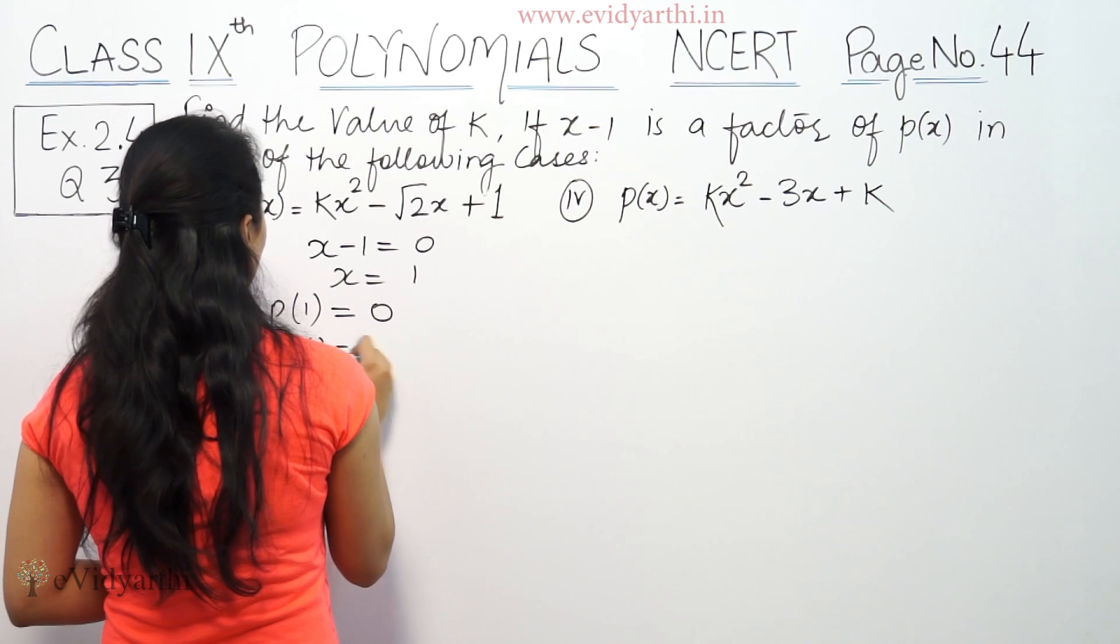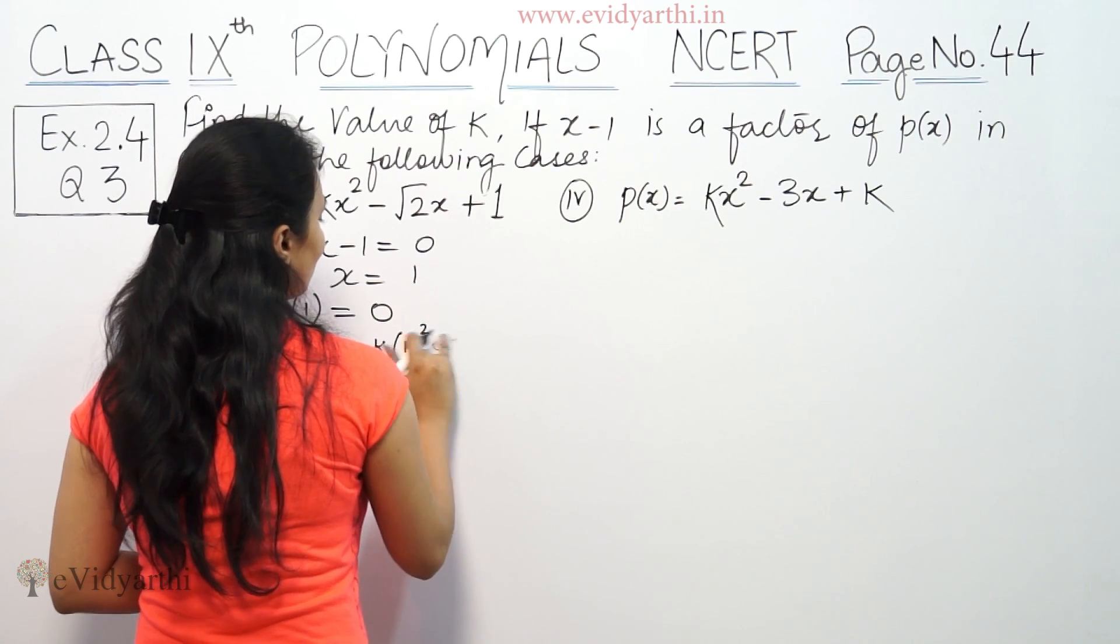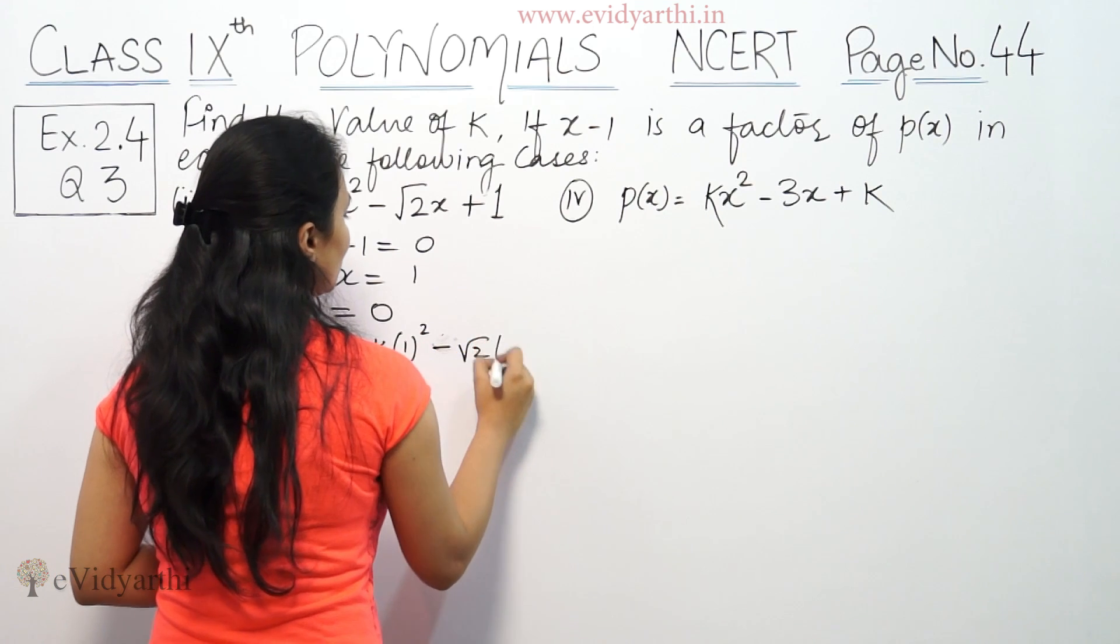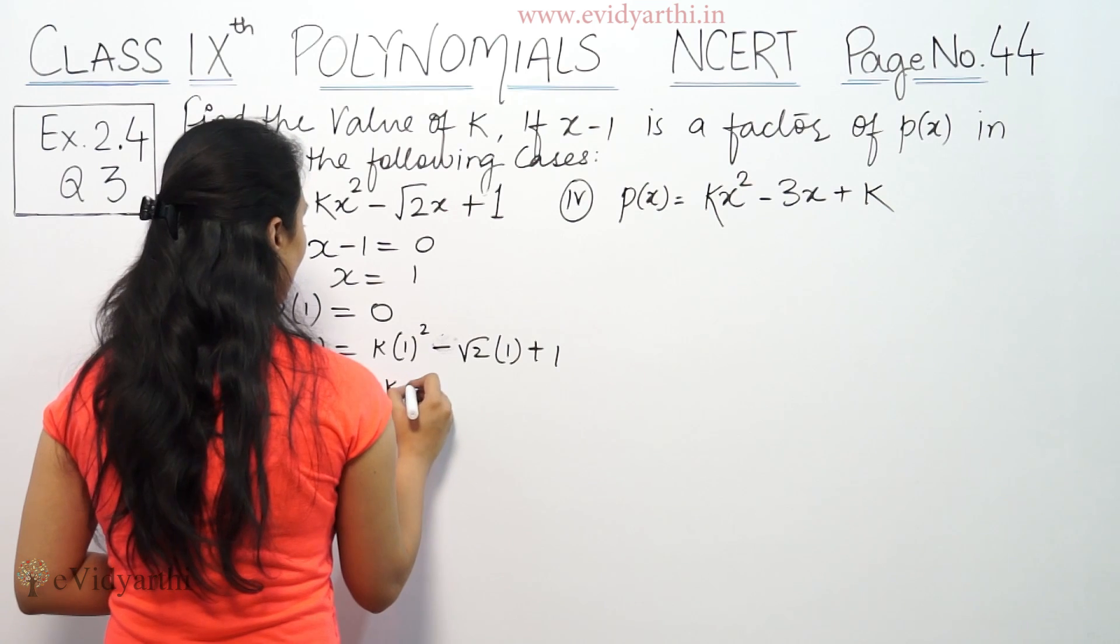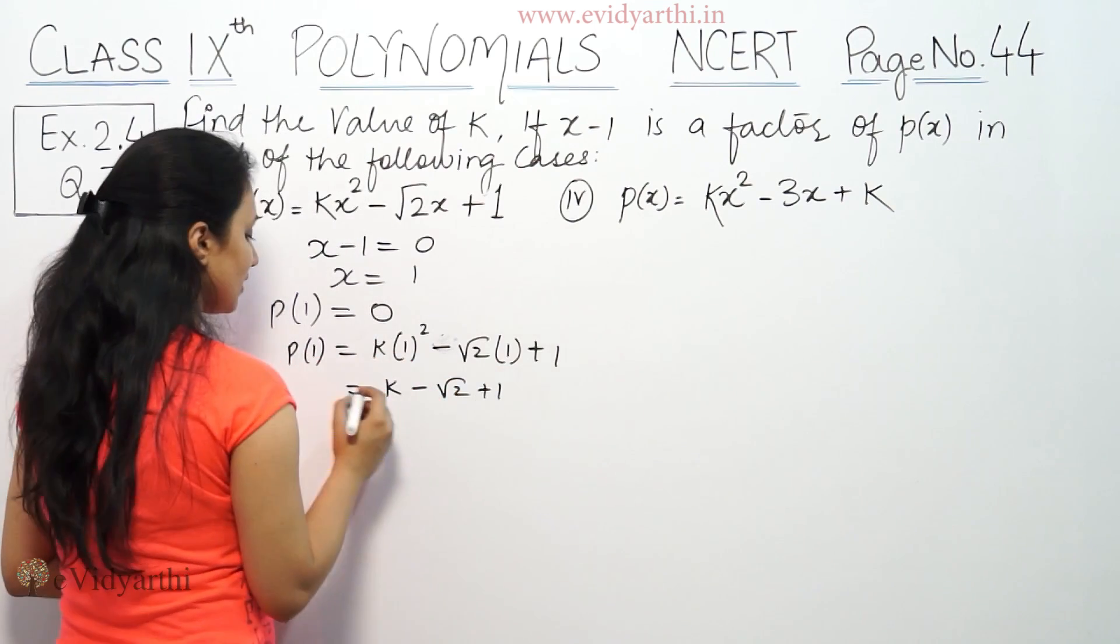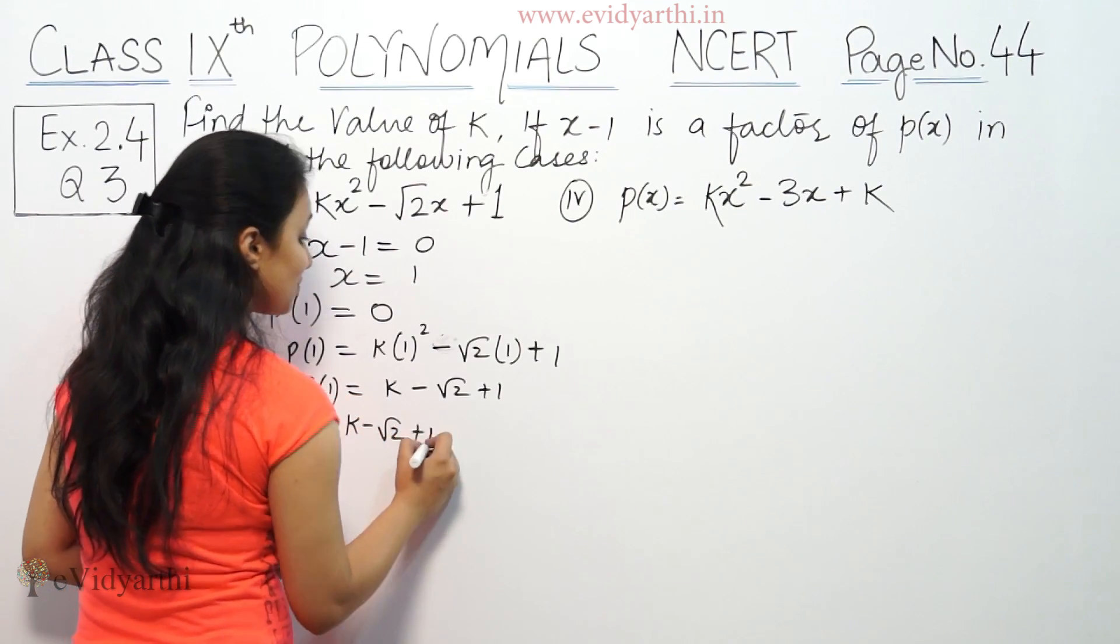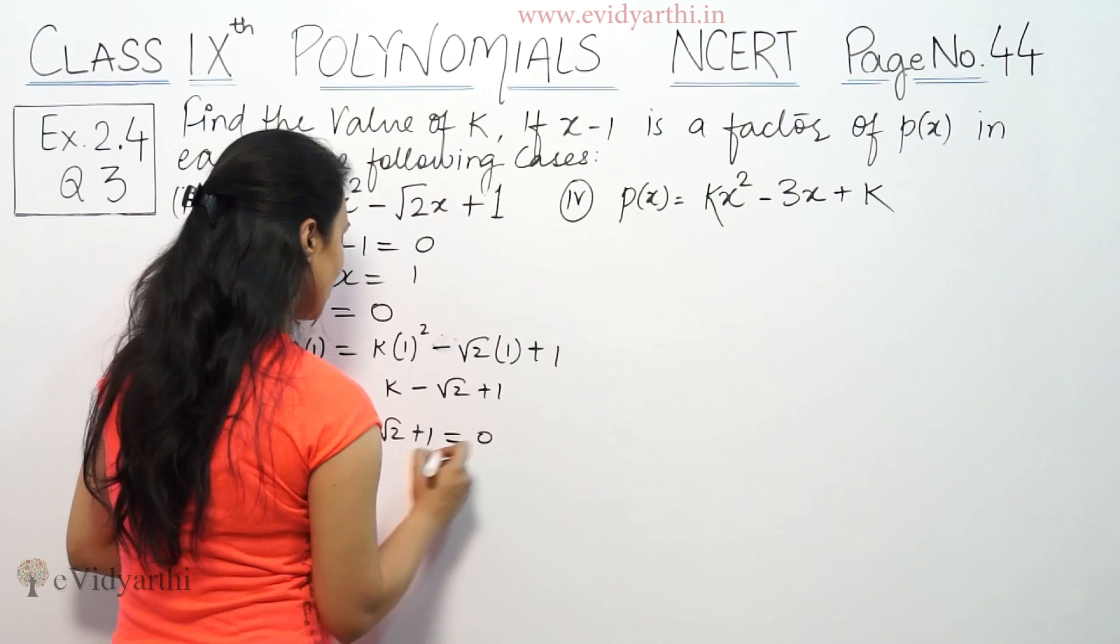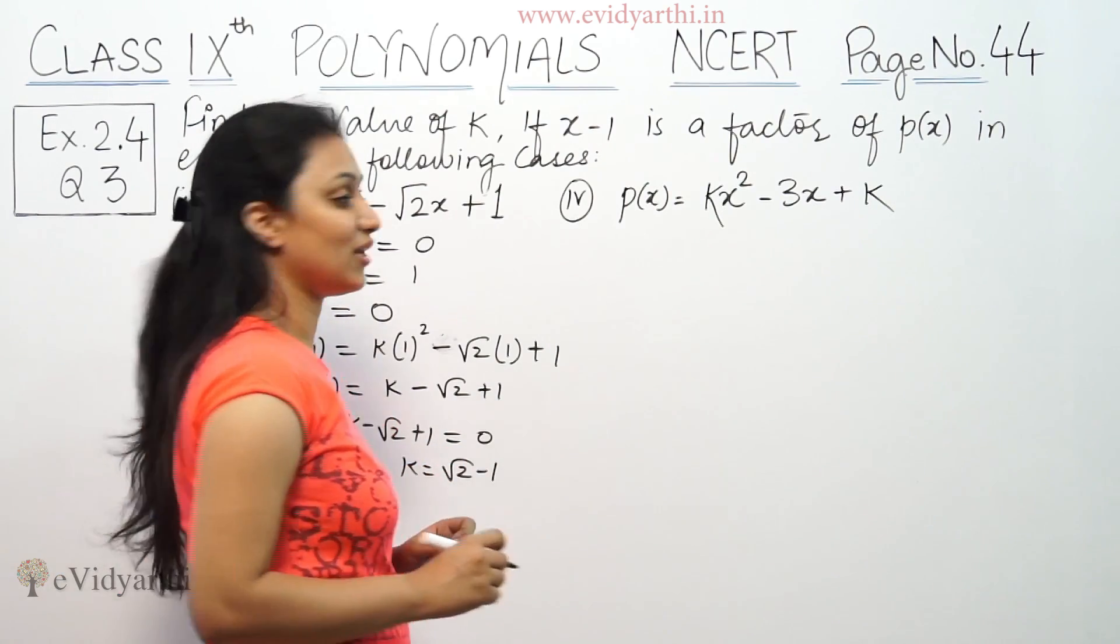So p(1) = k(1)² - √2(1) + 1, which equals k - √2 + 1. This is p(1), and this equals 0. Therefore, k = √2 - 1. This is the value of k.